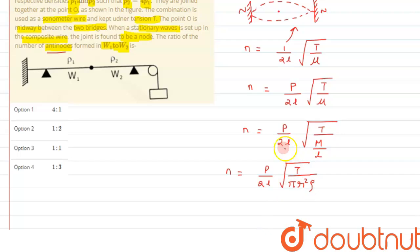From here, if we substitute m as rho into V, finally the result we will get is T upon pi r squared into rho. So this is the result we will get finally. Let's say this is our equation number one. This is the main equation we are going to use further.